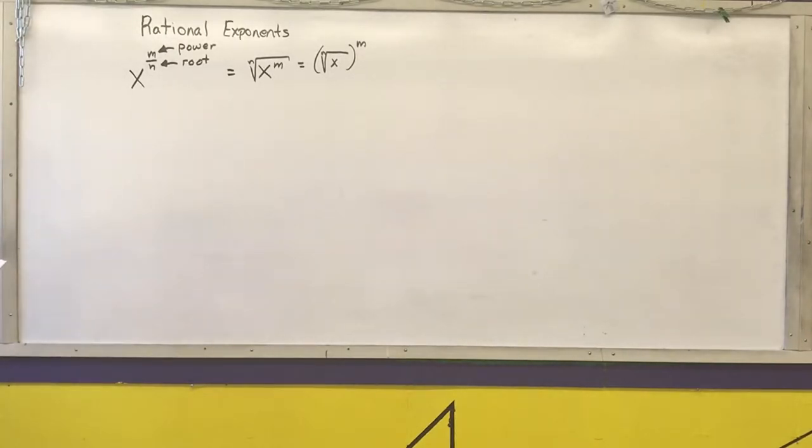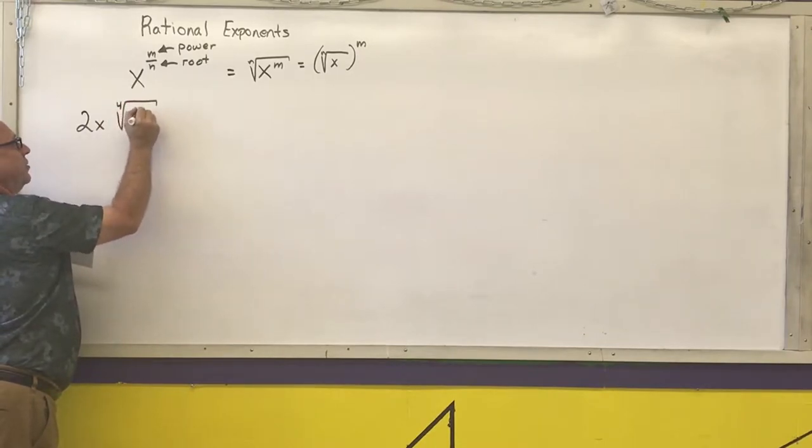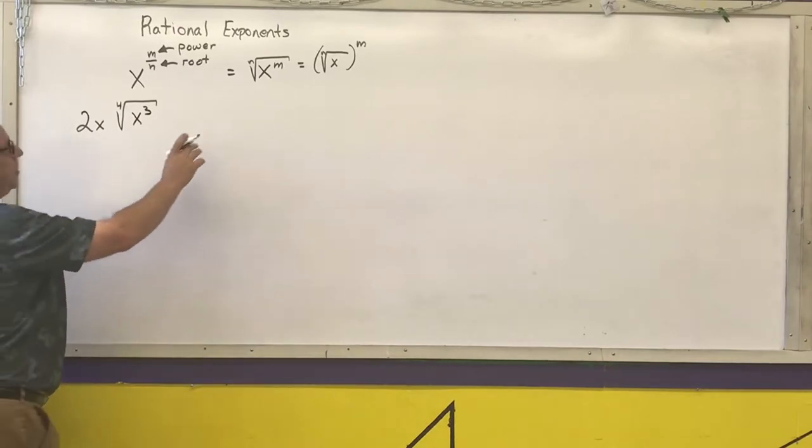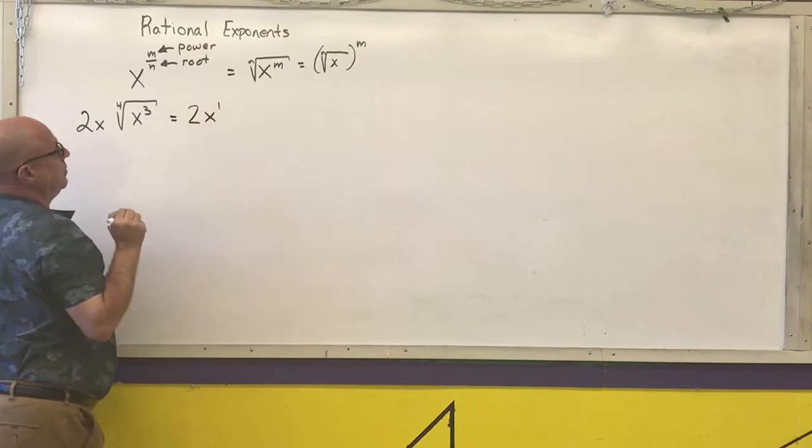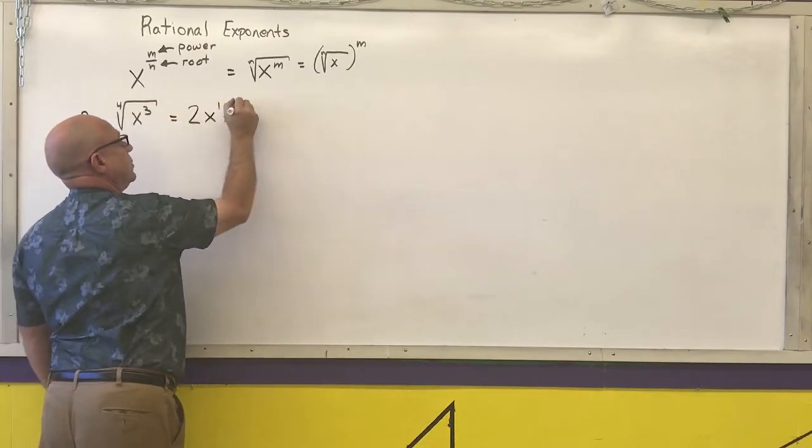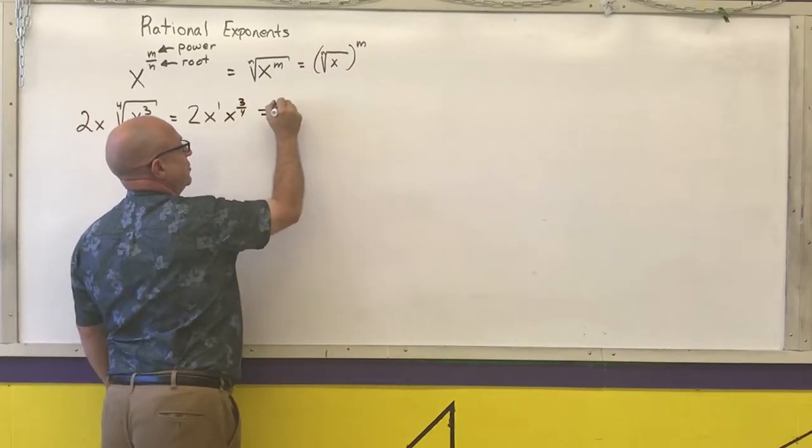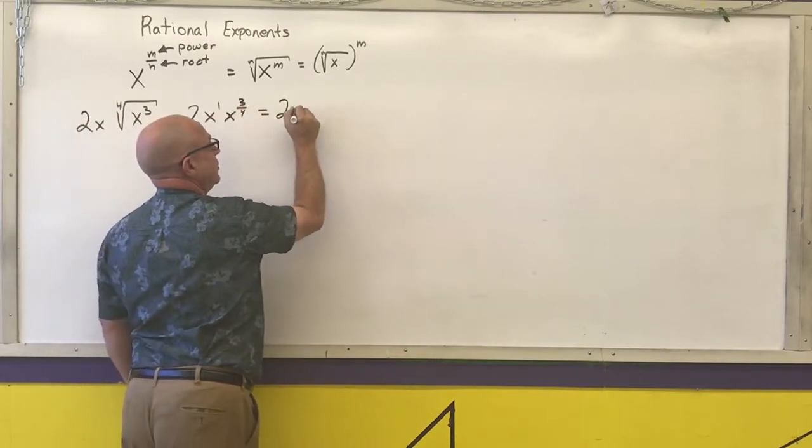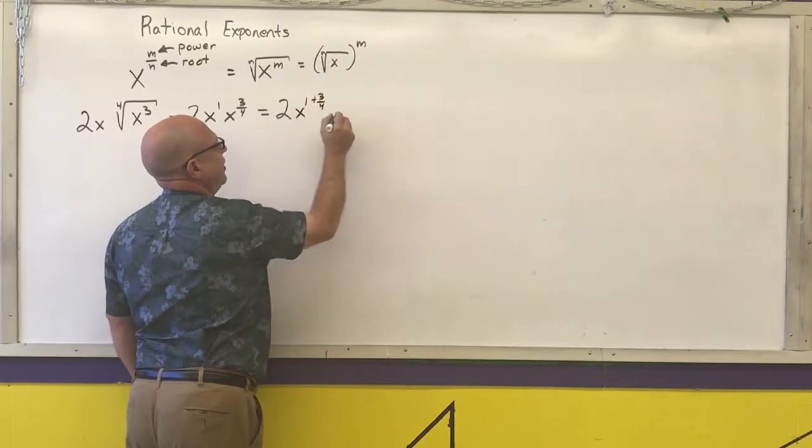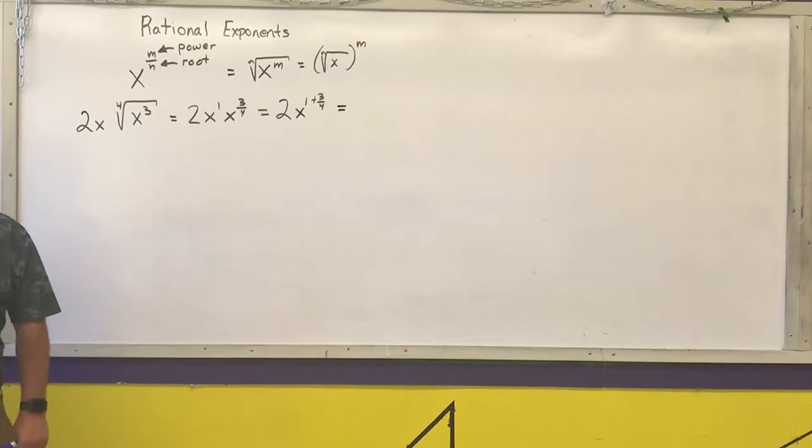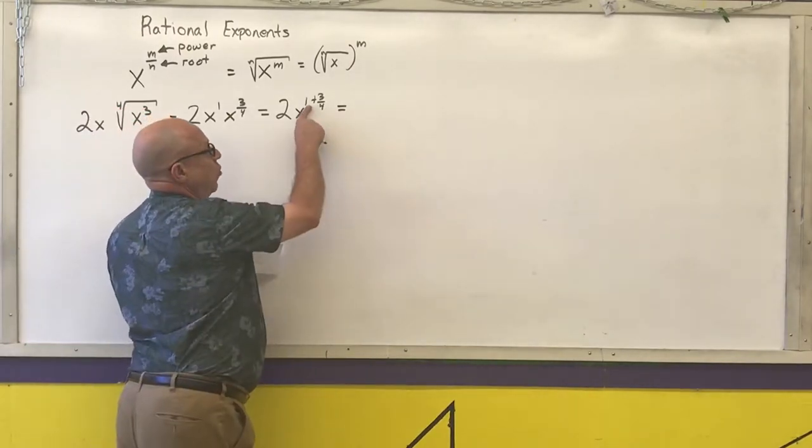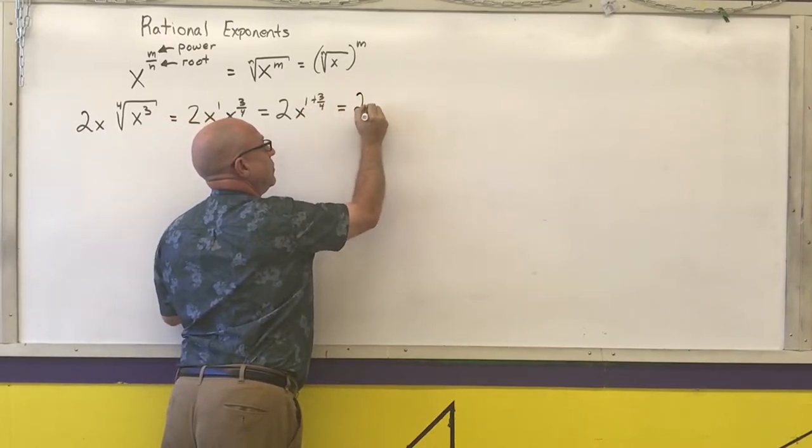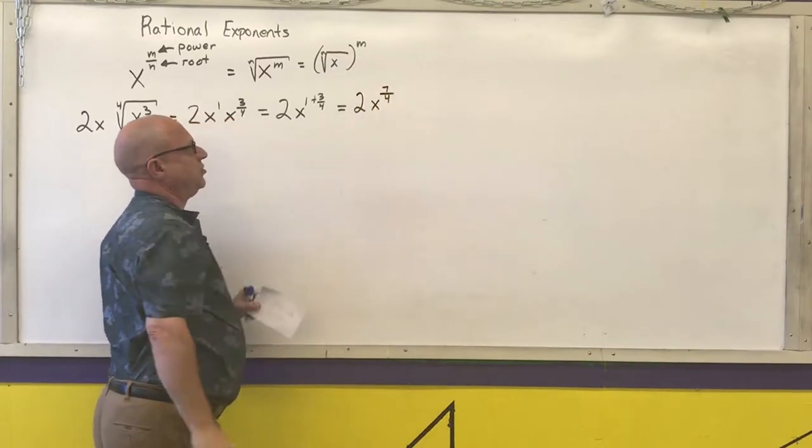The examples I want to give you, we'll start out here. 2x times the fourth root of x cubed. What I want to do is turn it from this form into this form. That's going to give me 2x to the 1 times x to the 3 quarters. Using my properties of exponents, I have the same base, so I can add the exponents. I need to add this and come up with an actual simplified fraction. 1 is four-fourths. Four-fourths plus three-fourths is seven-fourths. My final answer would be 2x to the seven-fourths.